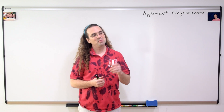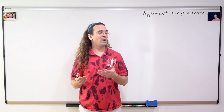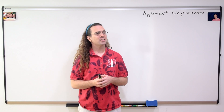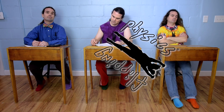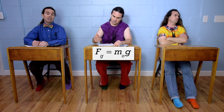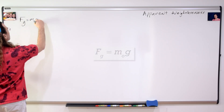Good morning. Billy, what is the equation for the weight or the force of gravity acting on an object here on planet Earth? Force of gravity equals the mass of the object times the acceleration due to gravity.